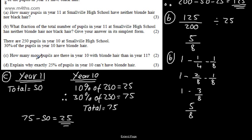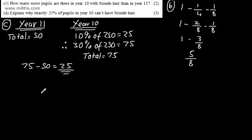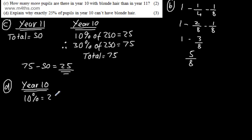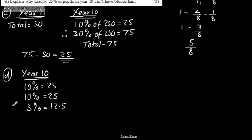In part D, it says explain why exactly 25% of pupils in Year 10 can't have blonde hair. The question carries three marks. For Year 10, 10% equals 25, another 10% equals 25, and 5% equals 12.5. That gives us 25% equal to 62.5.